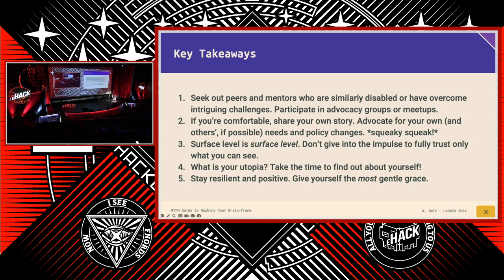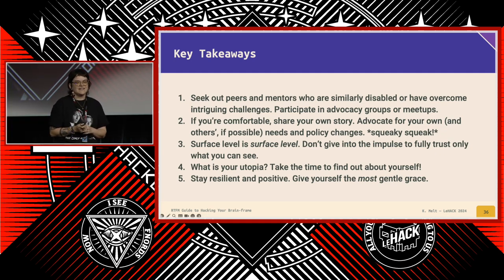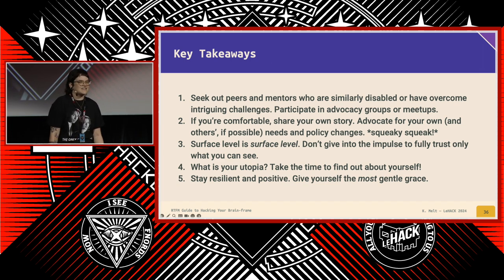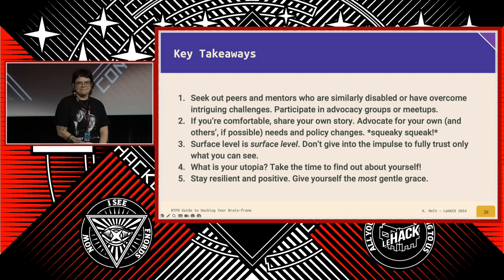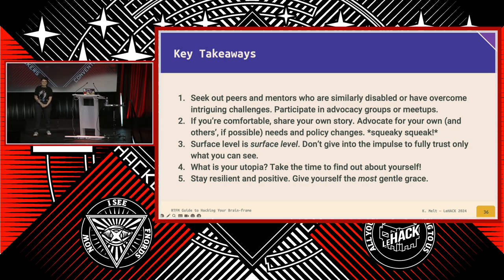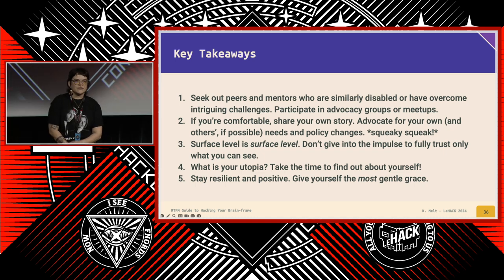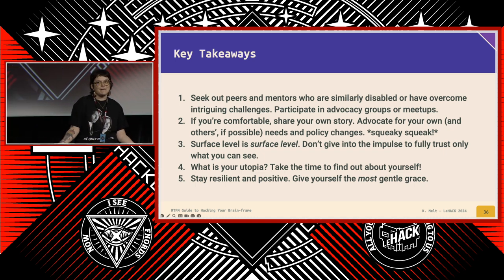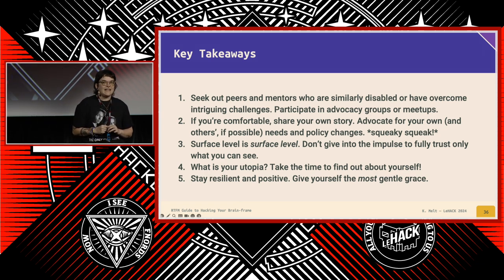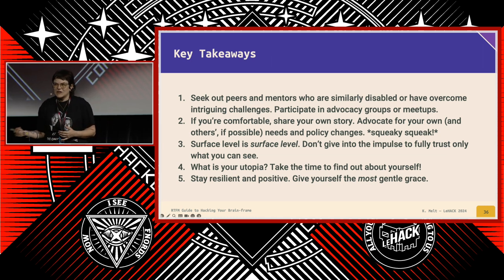Three: surface level is surface level. You can't see what's going on under the surface. Even though it's human instinct to make snap judgments, try to start pausing that a bit. Get more interested in what someone might be experiencing underneath, or have experienced — it can help you with that compassionate edge. Because we're all just humans, life is hard, we're all struggling and doing the best we can. Number four: what is your utopia? This is a question Wyn asks all the time, and the real idea in creating your user manual is to figure out your utopia so that you can make that happen. If you don't know what your utopia is, you're never going to reach it.